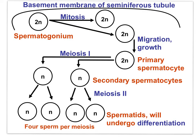Here is the last slide that outlines spermatogenesis, showing the relationships among spermatogonia, spermatocytes, and spermatids. Spermatogonia undergo mitosis, and one cell, through growth and migration, becomes the primary spermatocyte. The diploid primary spermatocyte undergoes meiosis I to become two secondary spermatocytes, both haploid. Secondary spermatocytes finish meiosis II to become spermatids that differentiate into mature spermatozoa, with further maturation to occur in the epididymis.